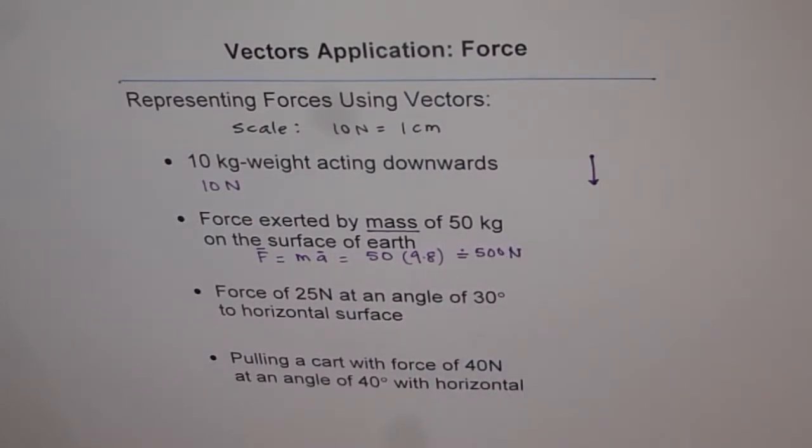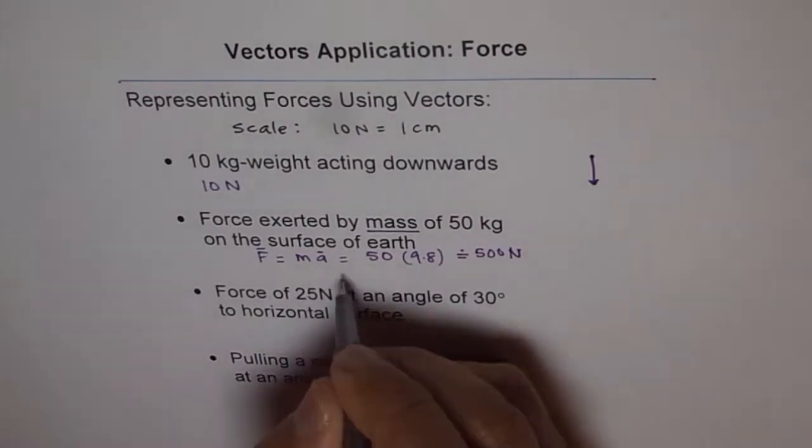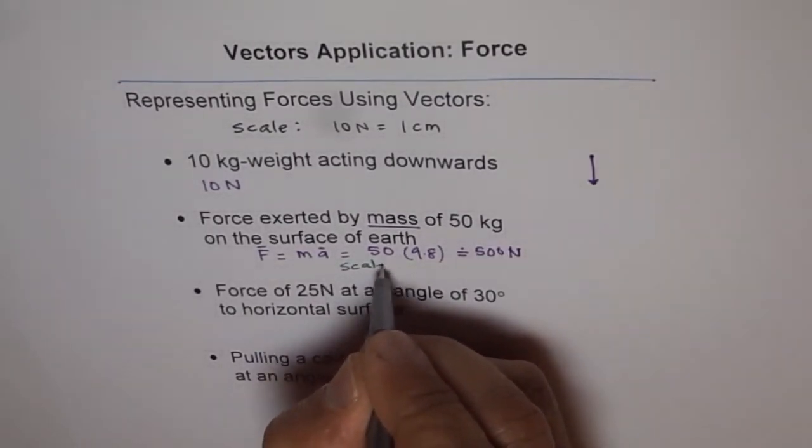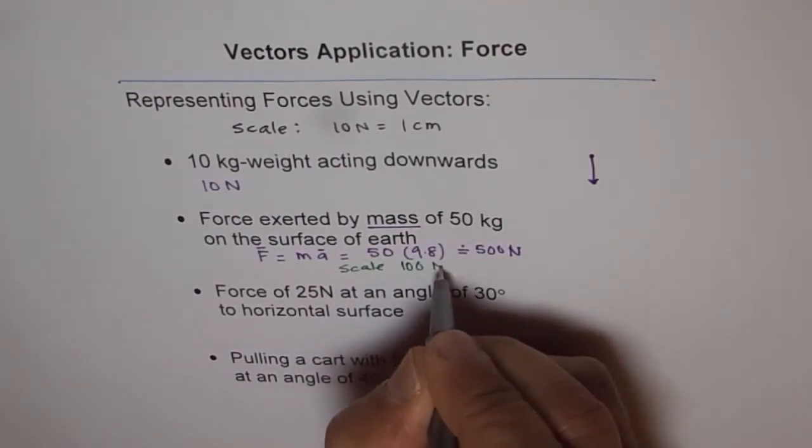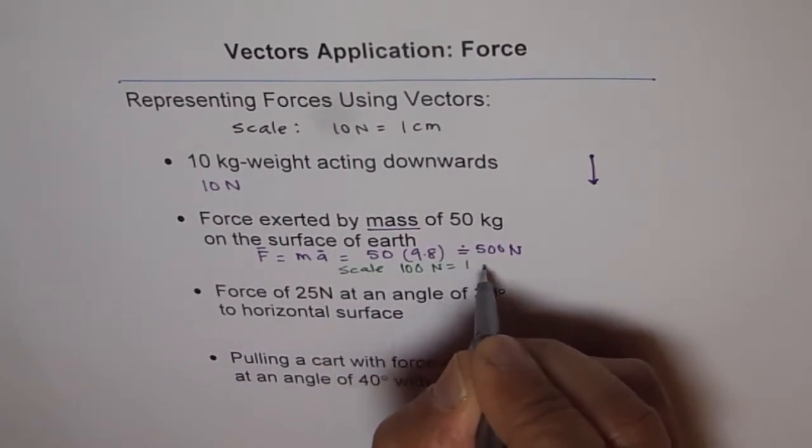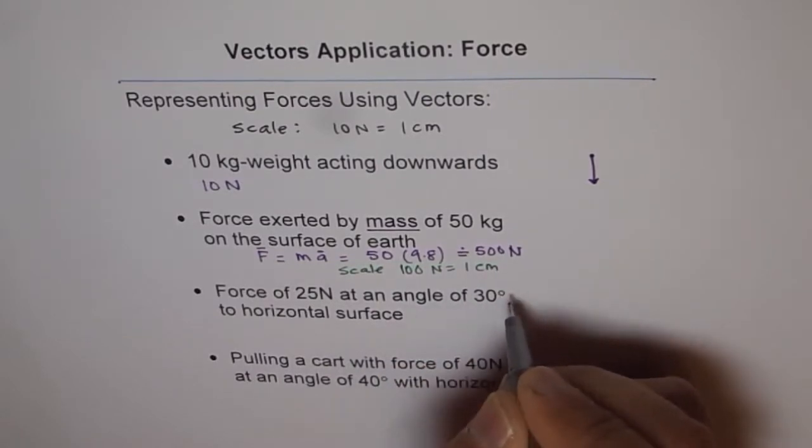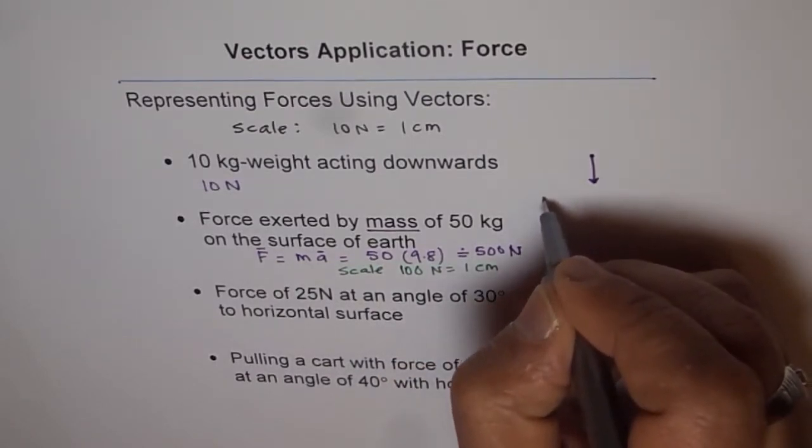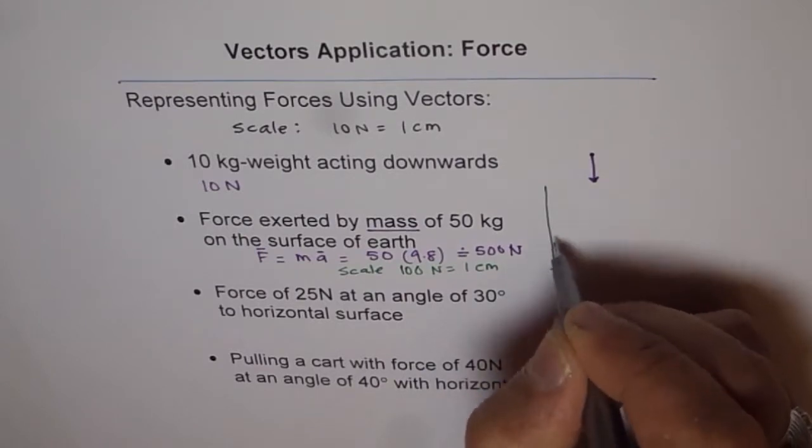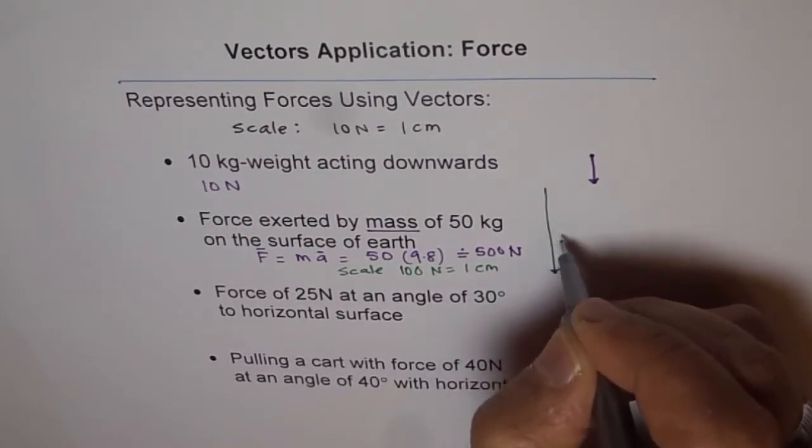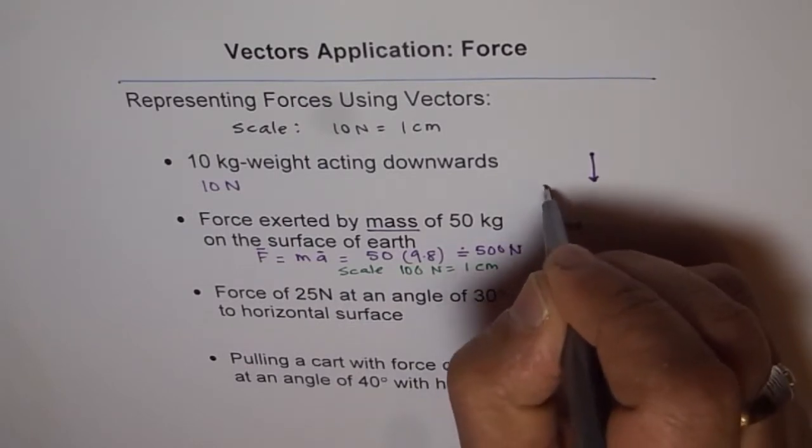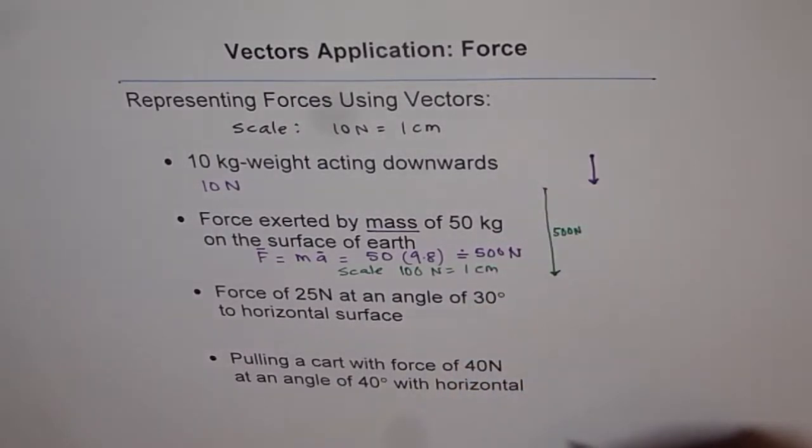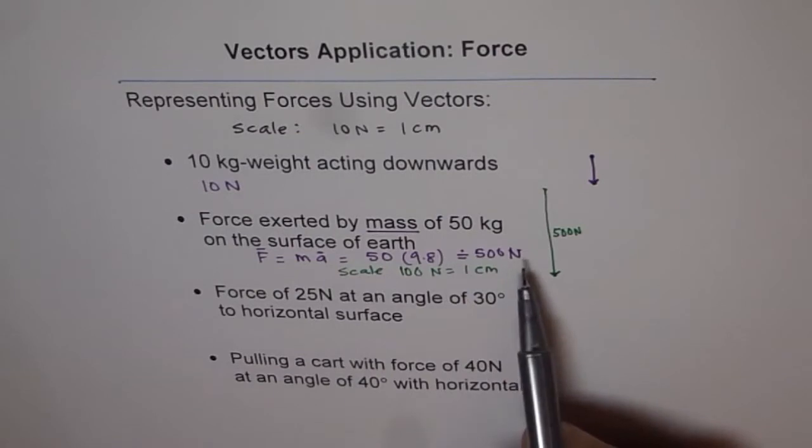We will use a different scale here. Now a scale could be 100 Newton equals to 1 centimeter. So in that case, we will draw a line which is acting downwards. Let's say this is 5 centimeter. So we have this as 500 Newtons acting downwards. So that is how you have to do it.